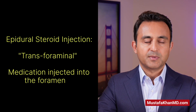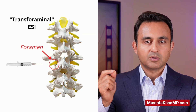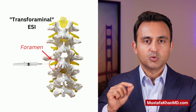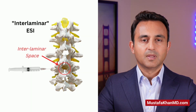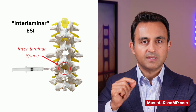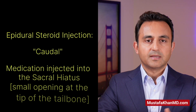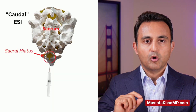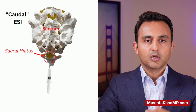The first technique is called a transforaminal epidural steroid injection. Using this technique, a needle is inserted into the foramen and medication is injected right next to the nerve. The second technique is called the interlaminar epidural steroid injection, in which medication is injected between the lamina and a large quantity of medication can be delivered. The third technique is the caudal epidural steroid injection, in which medication is injected through a small opening in the tailbone and a large quantity of medication can be delivered to the spine.